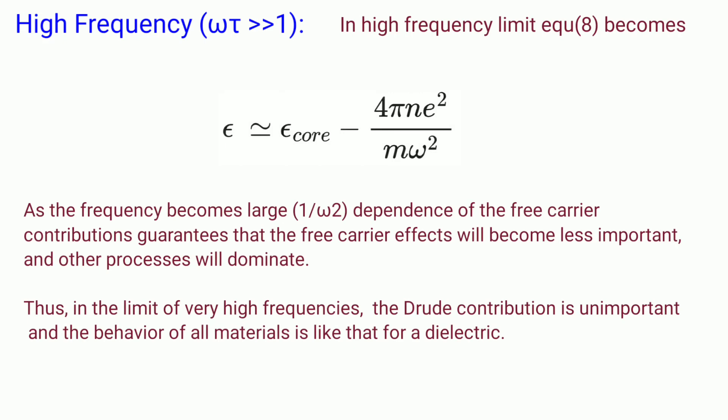For very high frequencies, i.e., ωτ > 1, equation 8 becomes ε = ε_core - 4πne²/(mω²). As the frequency becomes large, the 1/ω² dependence of the free carrier contribution guarantees that the free carrier effects will become less important and other processes will dominate. Thus, in the limit of very high frequencies, the Drude contribution is unimportant and the behavior of all material is like that of a dielectric.